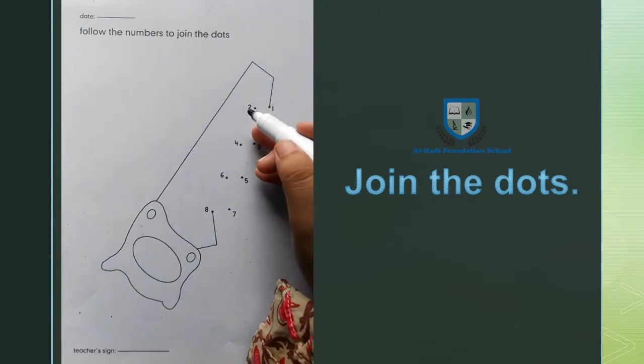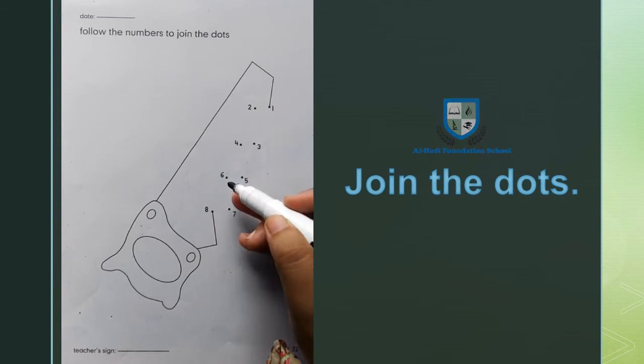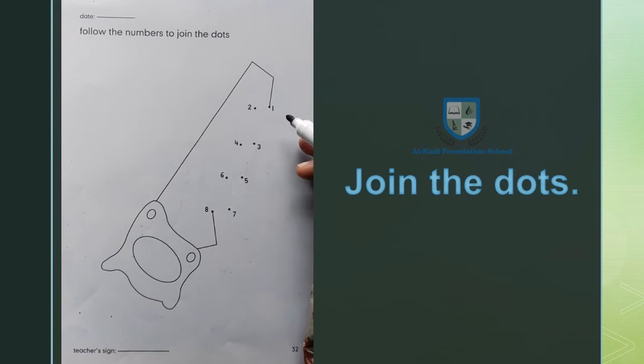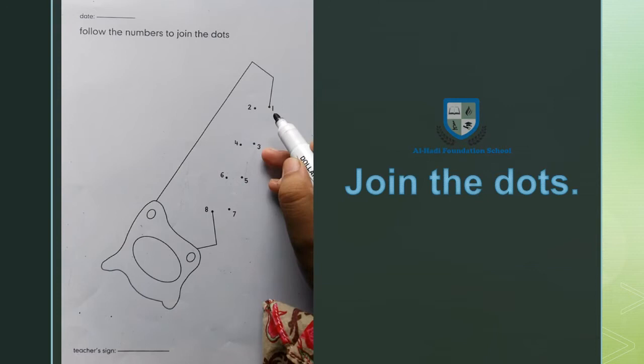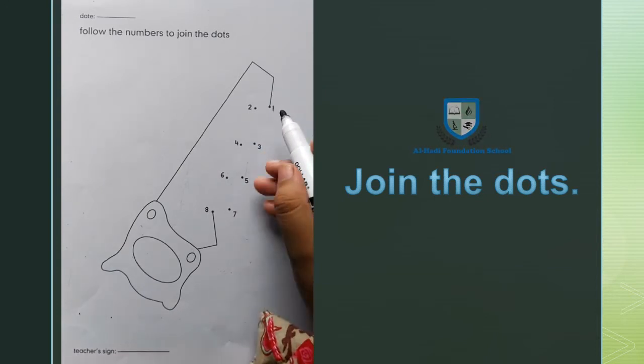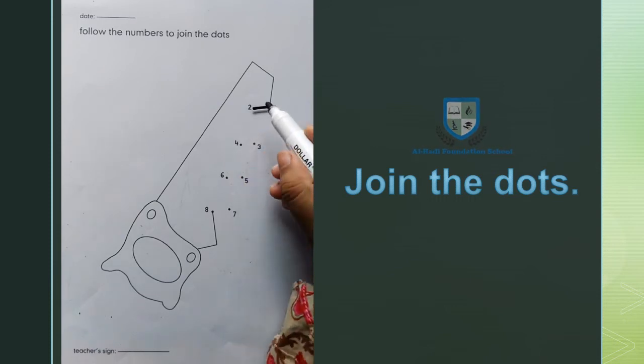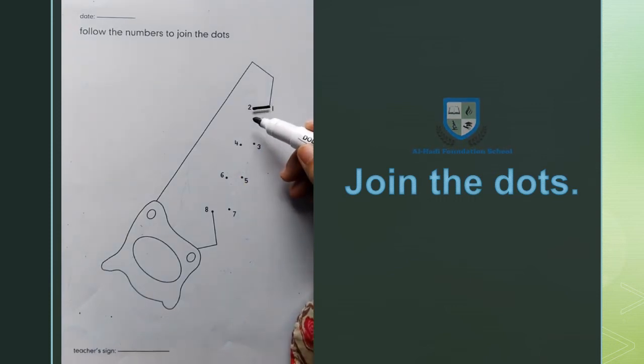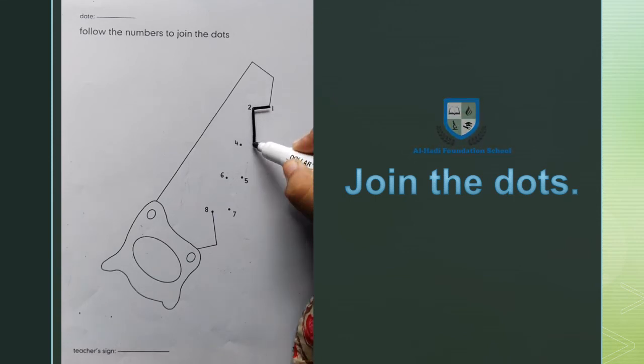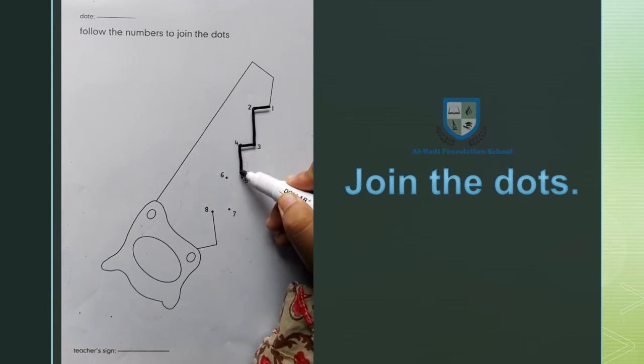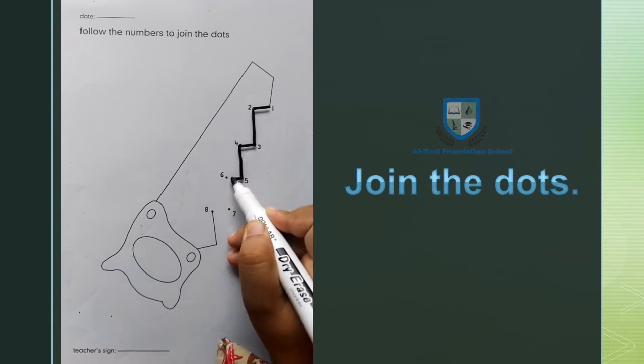Yehaan peh hume 1, 2, 3, 4, 5, 6, 7, and 8. Yehaan peh hume 1, 2, 3, 4, 5, 6, 7, and 8.